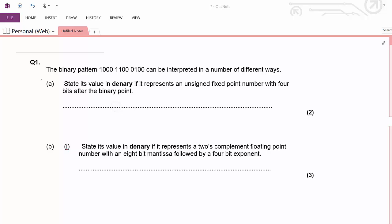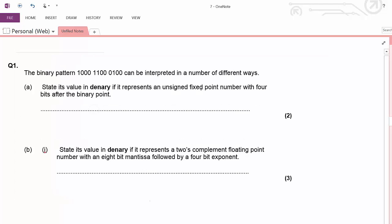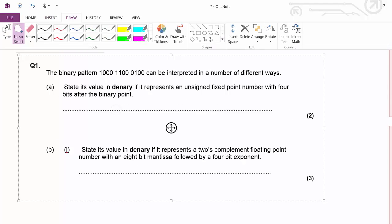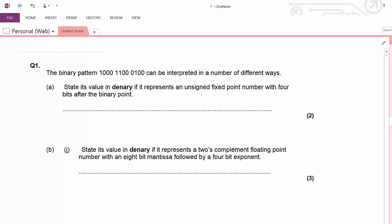Part A: State its value in deanery if it represents an unsigned fixed point number with four bits after the binary point.